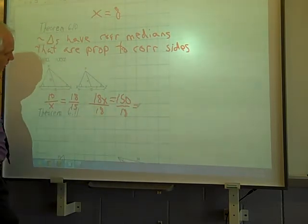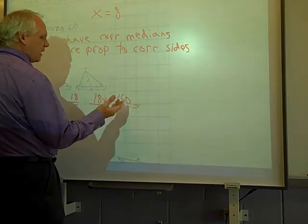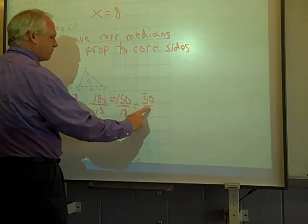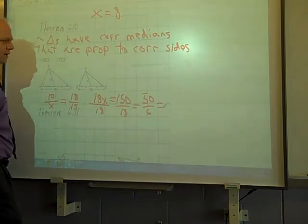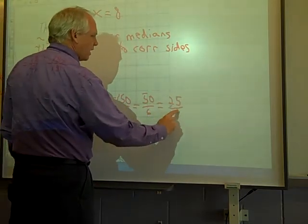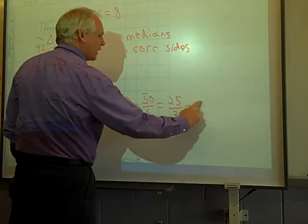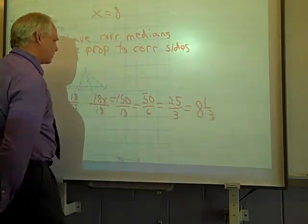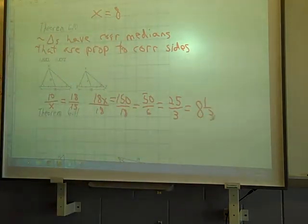You heard me say earlier I don't have my calculator, so if I divide by 3, I know I got 50 here and 6 here. And if I divide by 2, I got 25 and I got 3. And I know that is 8 and a third, so x is equal to 8 and one third.